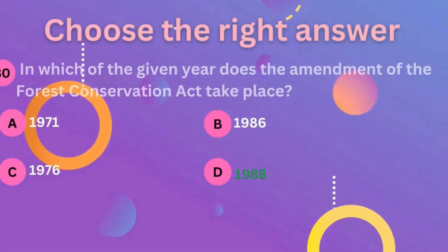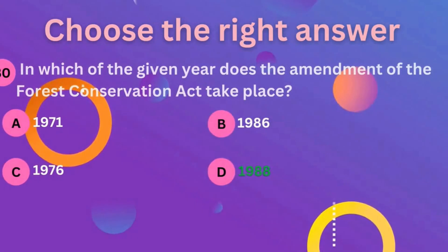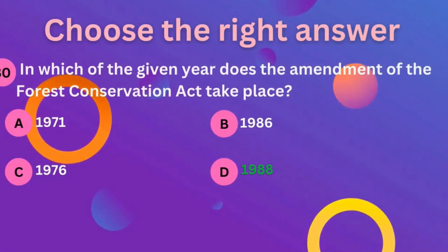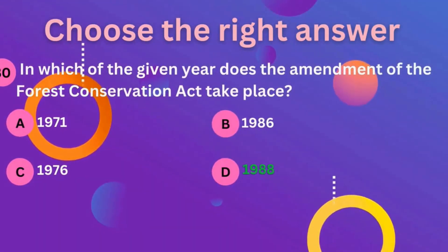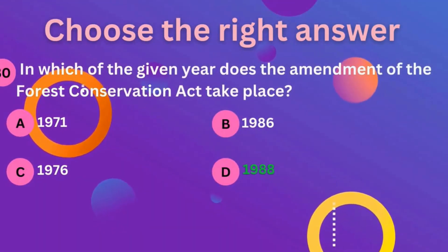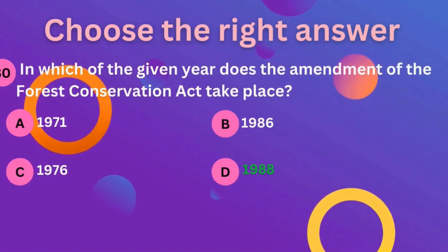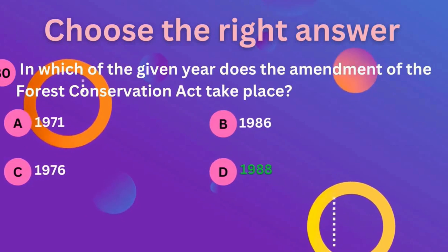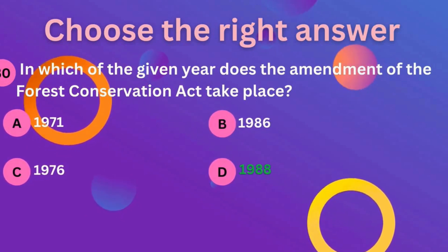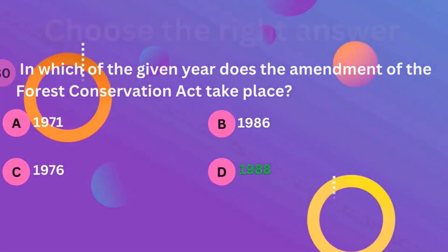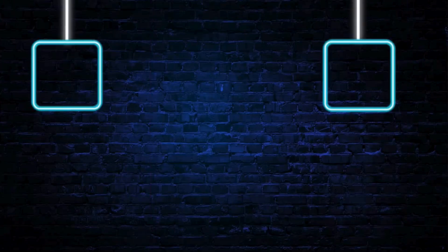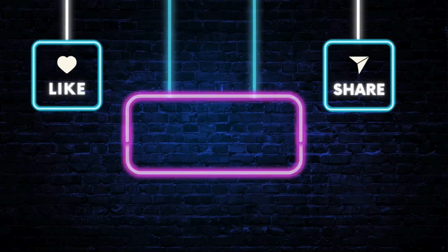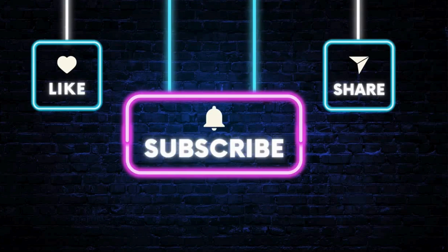The last question: in which year did the amendment of the Forest Conservation Act take place? The correct answer is 1988.